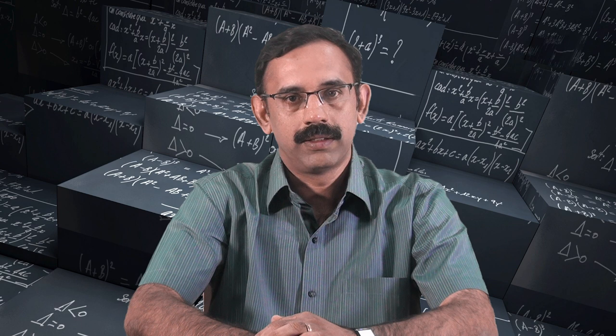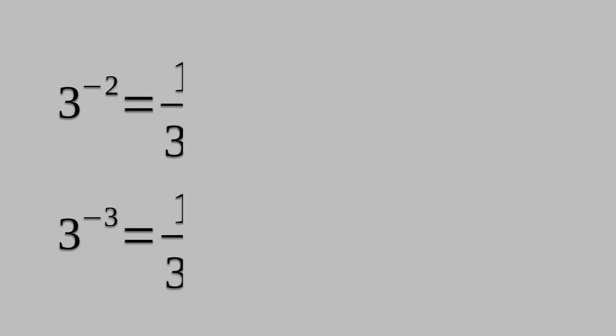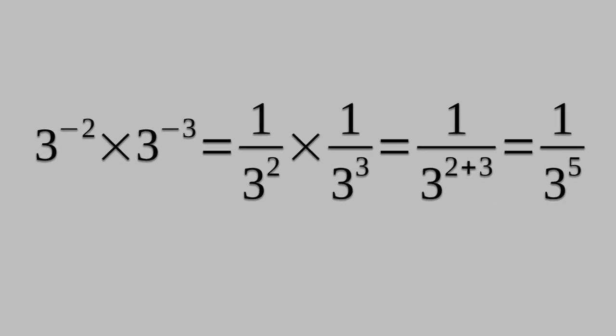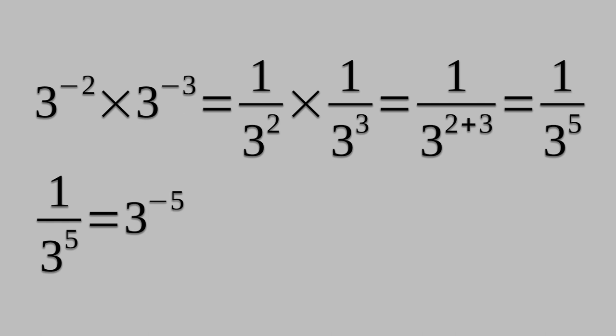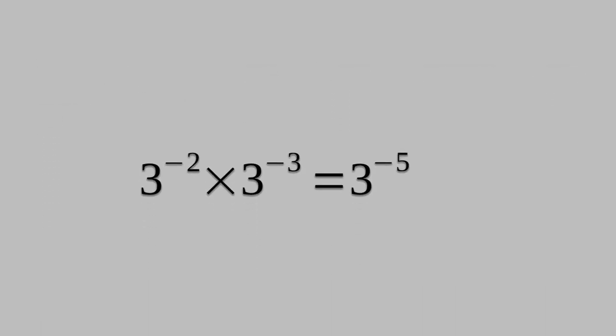We will check with some examples. Let us find 3 raised to minus 2 times 3 raised to minus 3. We know that 3 raised to minus 2 is 1 divided by 3 square, and 3 raised to minus 3 is 1 divided by 3 raised to 3. So, 3 raised to minus 2 times 3 raised to minus 3 equals 1 divided by 3 square times 1 divided by 3 cube, which is 1 divided by 3 raised to 2 plus 3, equal to 1 divided by 3 raised to 5, which is 3 raised to minus 5. Hence, 3 raised to minus 2 times 3 raised to minus 3 equals 3 raised to minus 5.